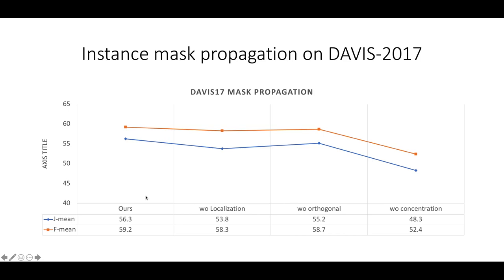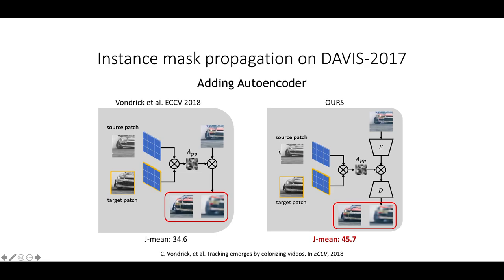In this slide, we show the quantitative ablation study on the task of instance propagation on DAVIS 17, using the J-mean and F-mean evaluations. The task is to propagate a ground truth segmentation mask from the first frame to the rest. We found that by dropping different blocks like localization, the orthogonal constraint, and the concentration constraint, the performance decreases constantly, which means all these modules contribute to the video correspondence learning.